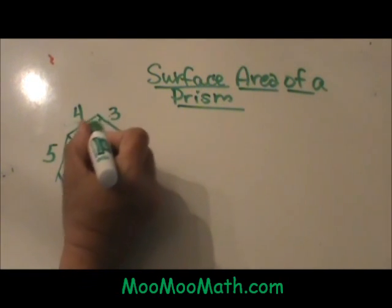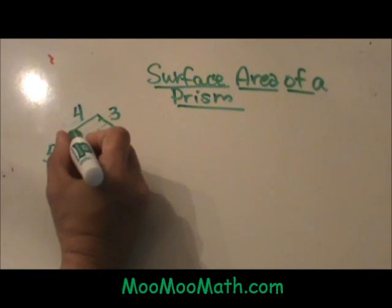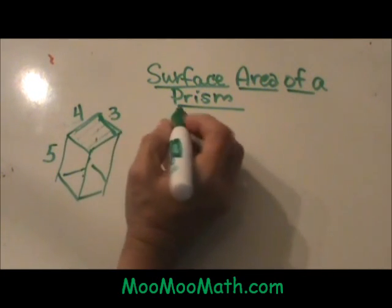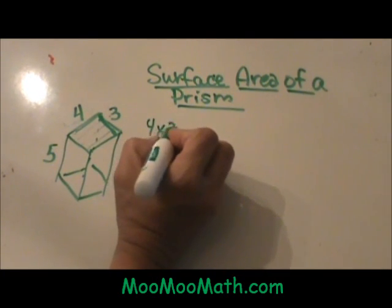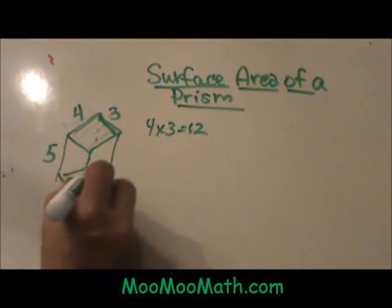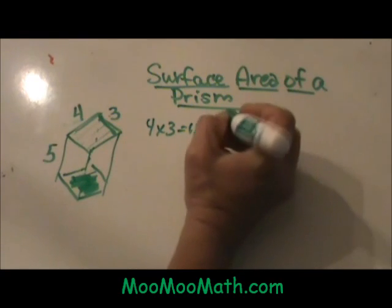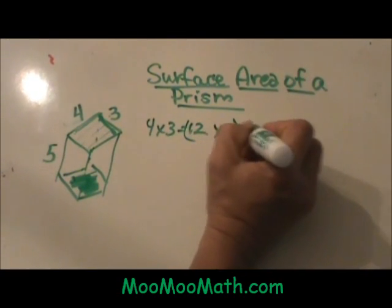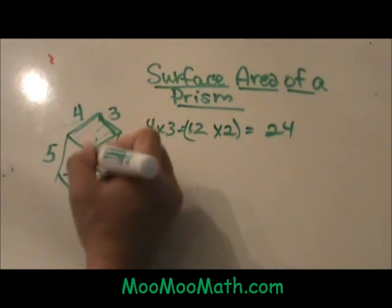So I am going to start with the top. This is a rectangle that is four by three, so that area is just four times three, which is twelve. But since this is a prism, we know the base is also twelve, so I can take that and multiply that answer times two to get the area of both the top and the bottom.